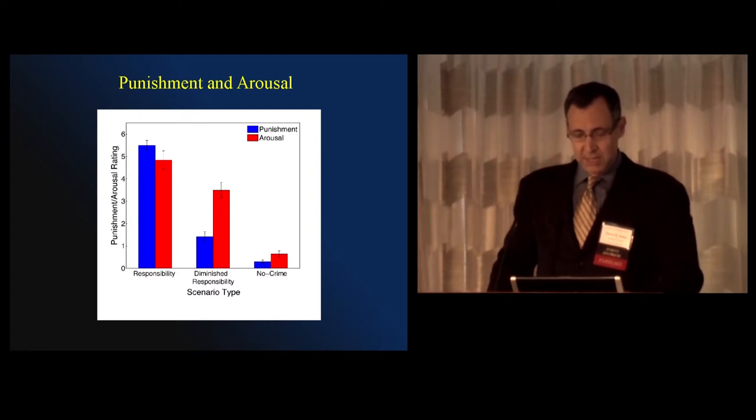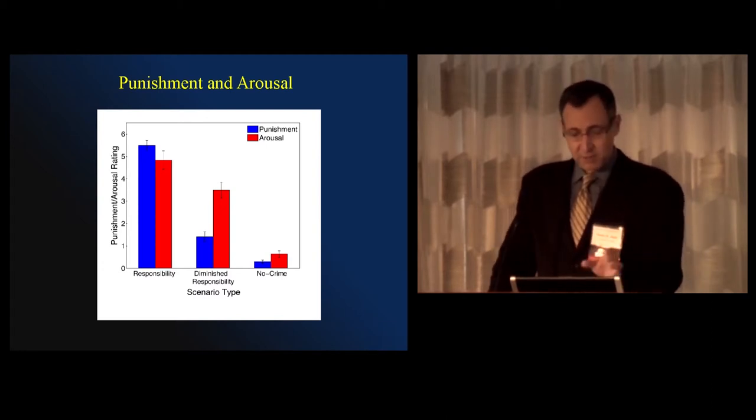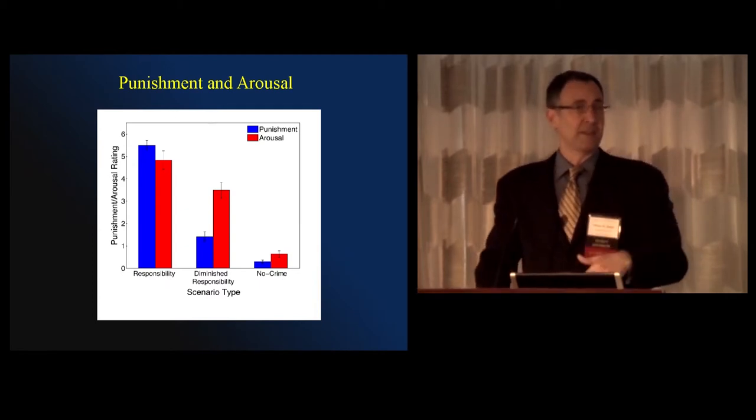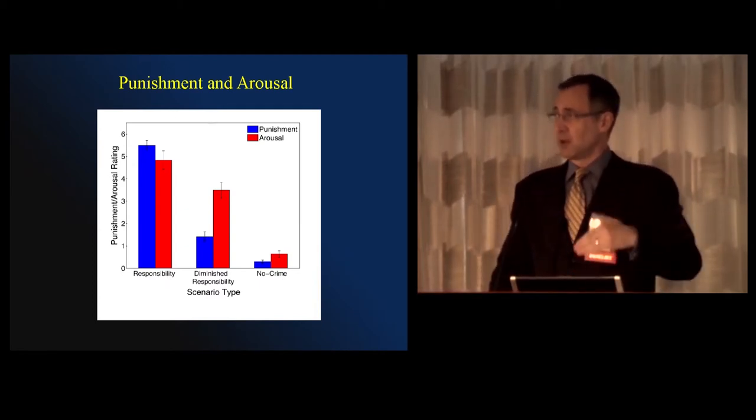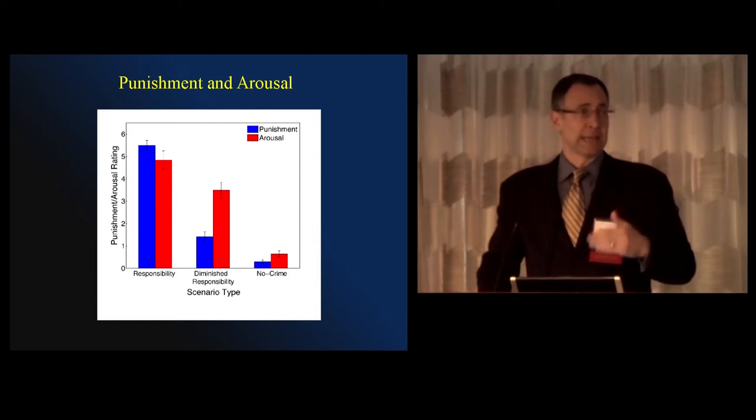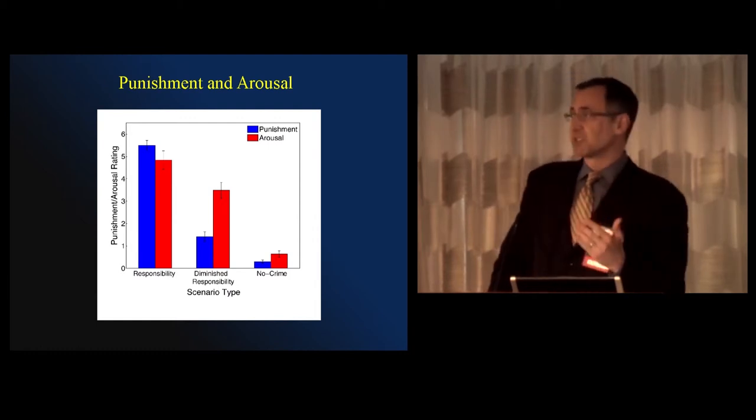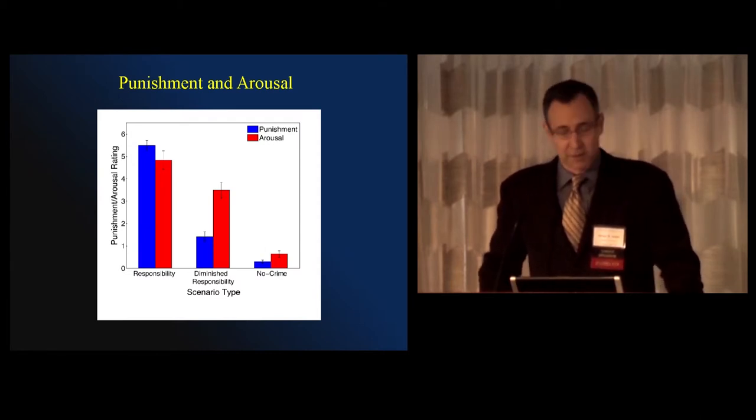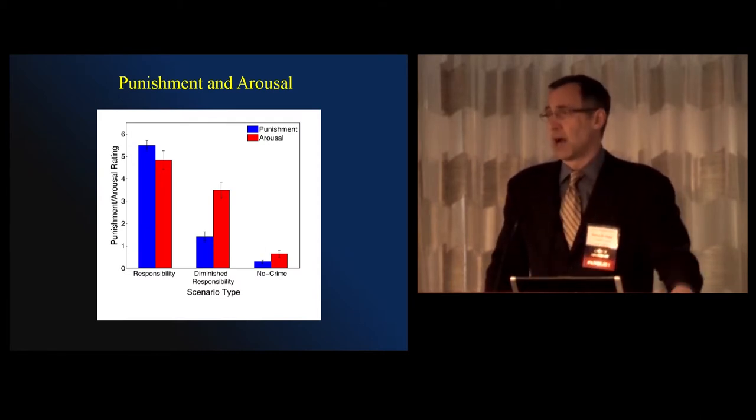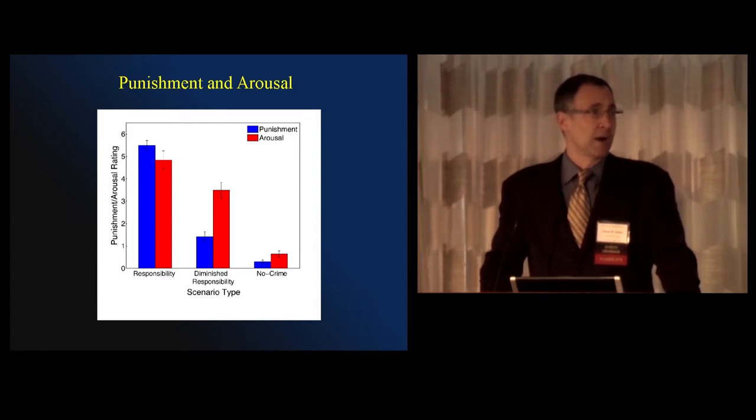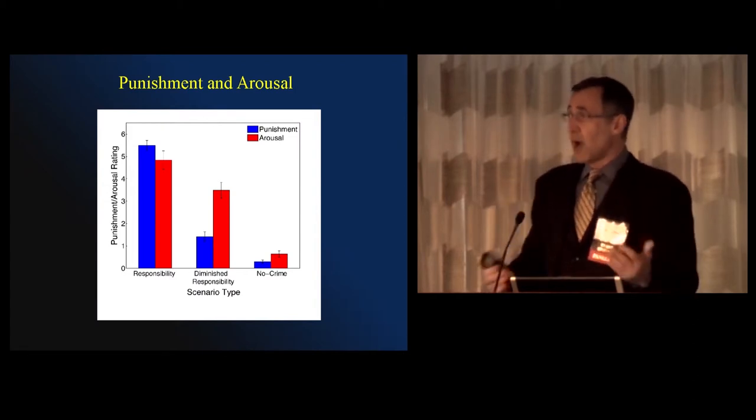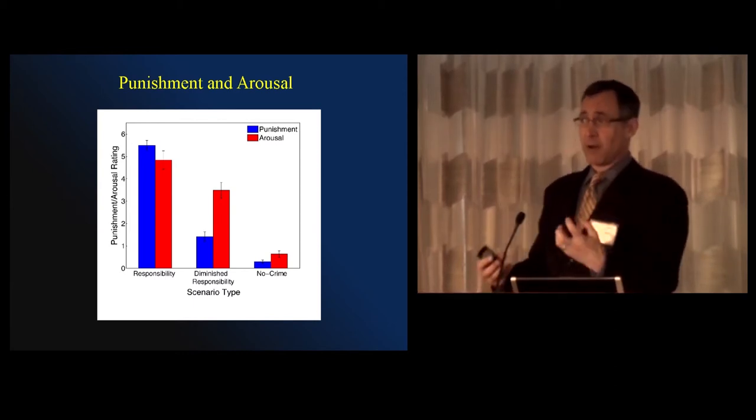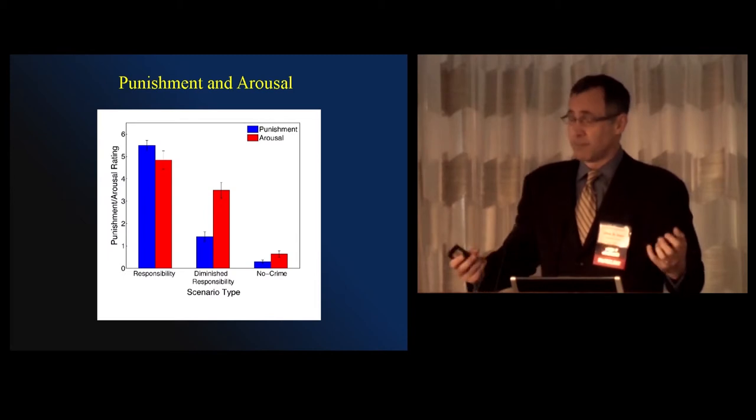But what I want to draw your attention to is between the first set of bars, which is responsibility, and the second set of bars, diminished responsibility, you'll notice some drop off in the height of the red bars. So the arousal is somewhat less when the state of mind is less purposeful. But the big thing here that we wanted to go after is notice how much the blue bar drops. Okay. Between the first blue bar and the second blue bar, you see very, very large drop off in the average punishment people are giving. And so what we wanted to figure out in part was what's going on in the brain to the best we can approximate it using fMRI.